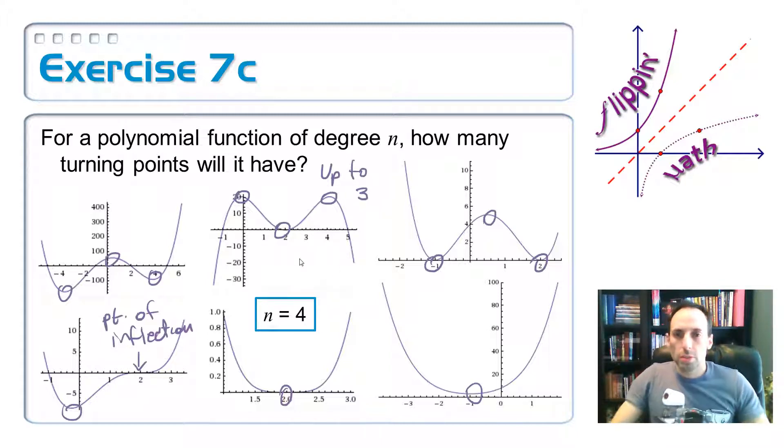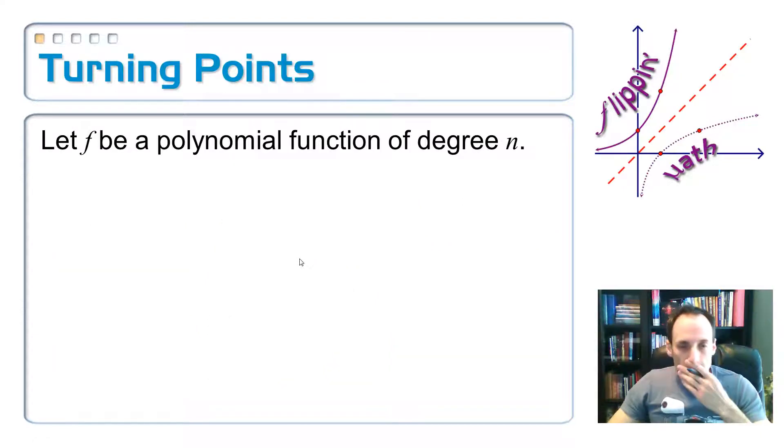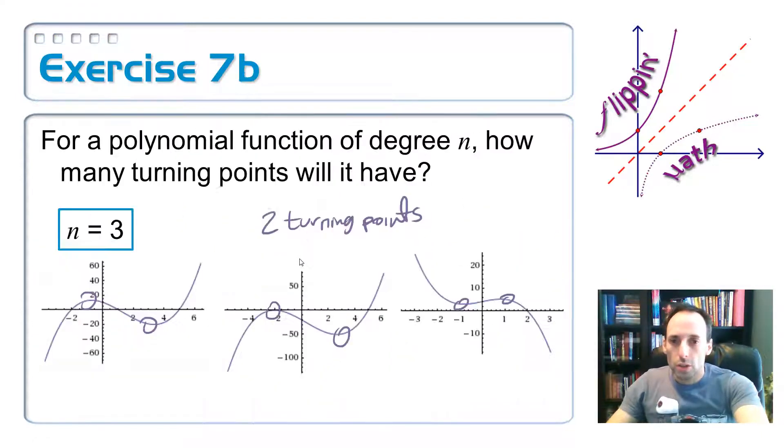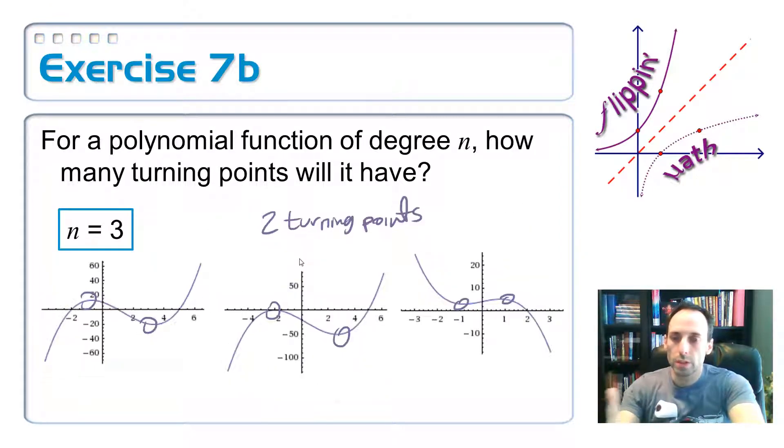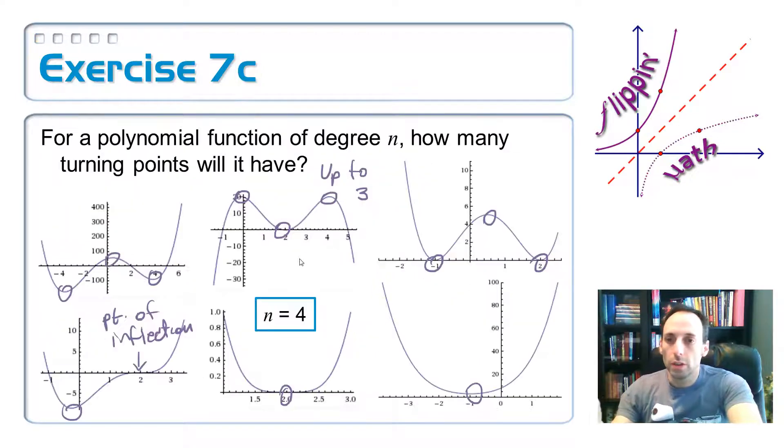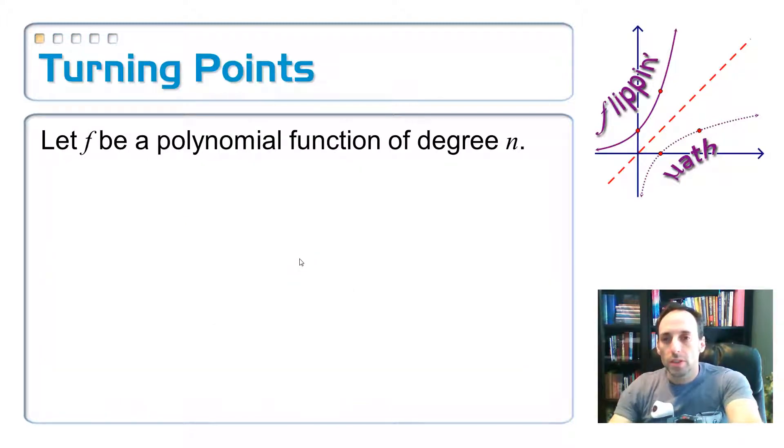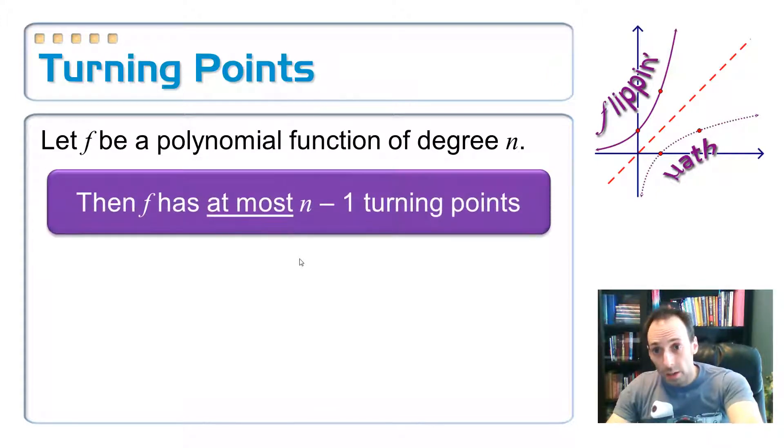What's the relationship between those things? When I look back at each one of these cases, degree is two, I only have one turning point. My degree is three, I have two turning points. My degree is four, I have up to three turning points. And in each one of these cases, it's one less than the degree. So that's what this is summarizing. Let F be a polynomial function of degree n. Then your function F has at most n minus one turning points.